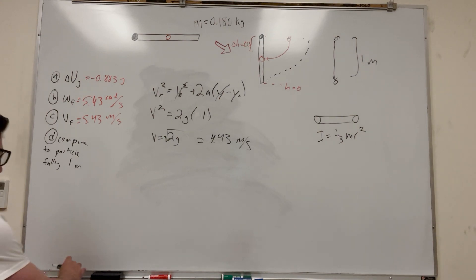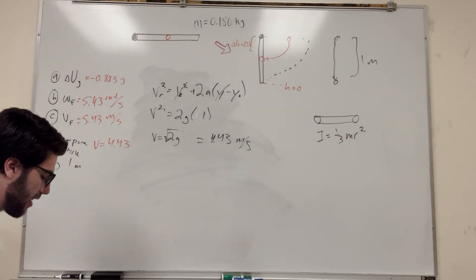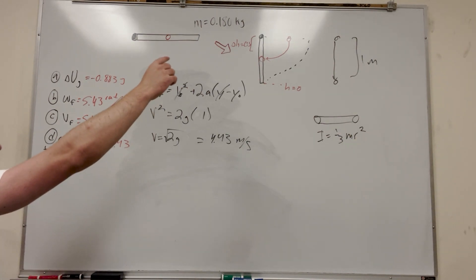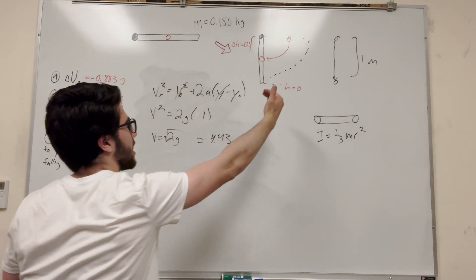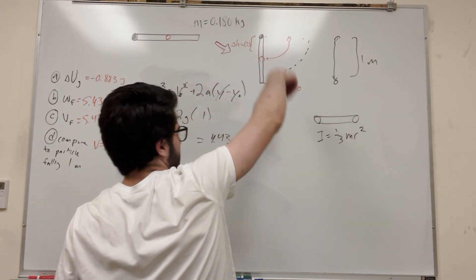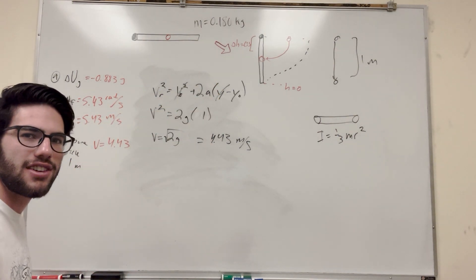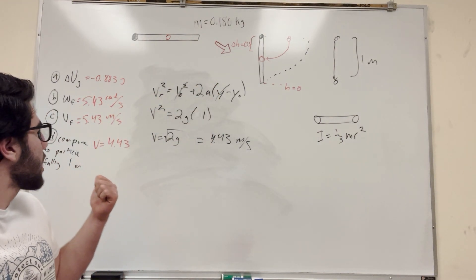So velocity is equal to 4.43. So it actually is moving faster if you have this rod. It's kind of interesting how that works, isn't it? So if you have this rod, it's going to have a stronger velocity going in this direction than a ball that just dropped from straight at rest would be. I guess that kind of makes sense. If you can try to rationalize that.